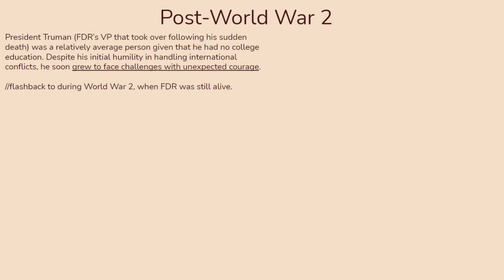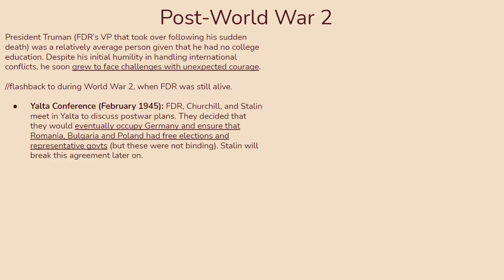Before we talk about Truman and the conflicts he'll face in the post-war era, let's talk about some stuff that happened while FDR was still alive and the war was going strong. You should know about the Yalta Conference, which happens in February of 1945. FDR, Churchill, and Stalin met in Yalta to discuss post-war plans, deciding to eventually occupy Germany and ensure that Romania, Bulgaria, and Poland had free elections and representative governments. Of course, none of this was binding, and Stalin eventually broke this agreement.